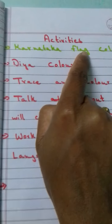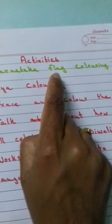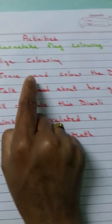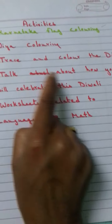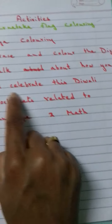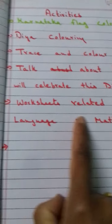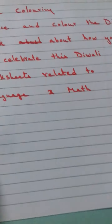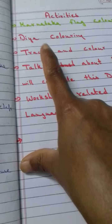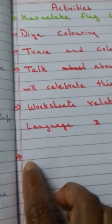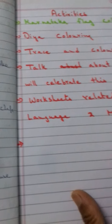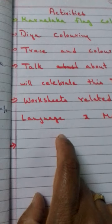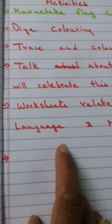Activities you can give to the child are Karnataka flag coloring, diya coloring, trace and color the diya, talk about how you will celebrate this Diwali, worksheets related to math and language, and you can also do color matching or diya matching activity. All these activity worksheets I will share in the later part of the video.